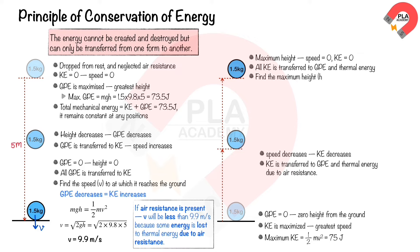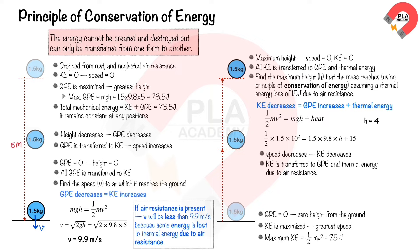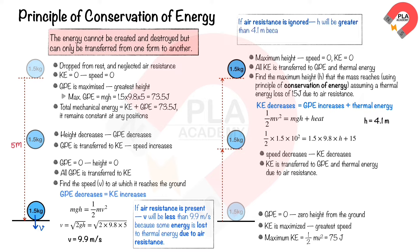To find the maximum height the mass reaches, we apply the principle of conservation of energy, assuming a thermal energy loss of 15 Joules due to air resistance. The decrease in kinetic energy equals the increase in both gravitational potential energy and thermal energy: ½mv² = mgh + thermal energy lost. Substituting m = 1.5, v = 10, g = 9.8, and thermal energy lost = 15, we find h = 4.1 meters. If air resistance is ignored, the height would be greater than 4.1 meters.